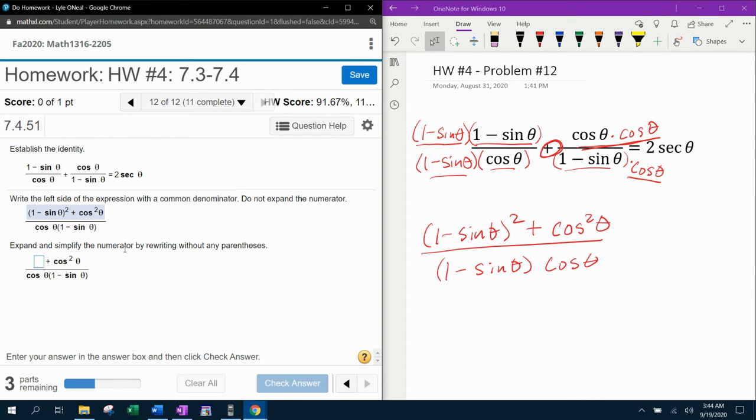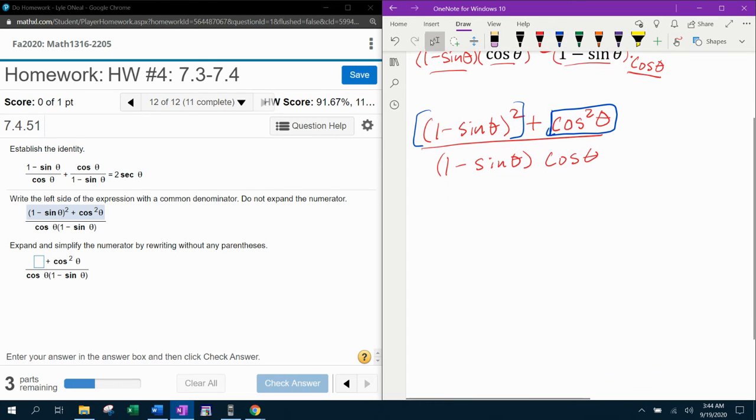Now it says expand and simplify the numerator by rewriting without any parentheses. So notice the cosine theta here they drop down. If I do over here my scratch work, notice that this is still there. So the one minus sine squared theta is what they want me to expand. And so here's how we're going to do that.